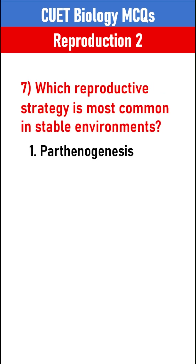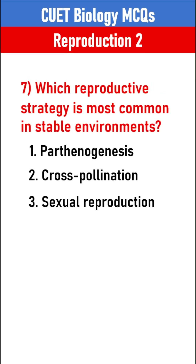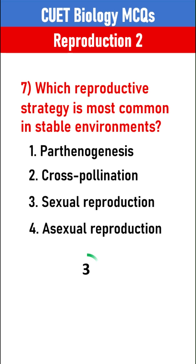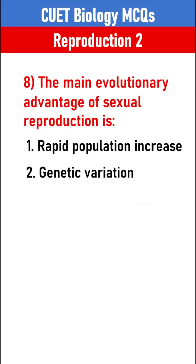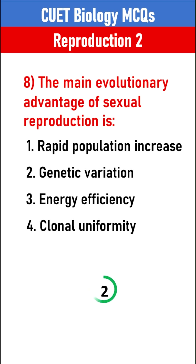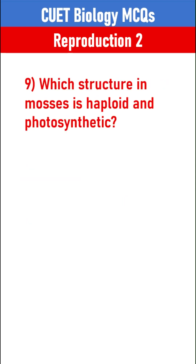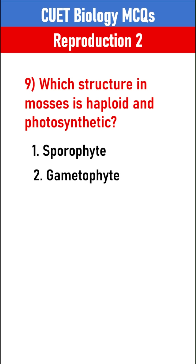Which reproductive strategy is most common in stable environments? Asexual reproduction. The main evolutionary advantage of sexual reproduction is Genetic variation. Which structure in mosses is haploid and photosynthetic?